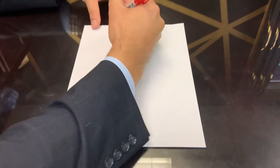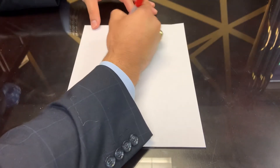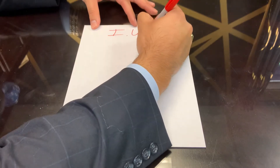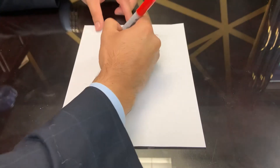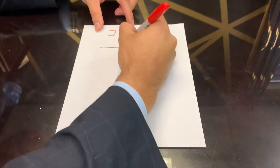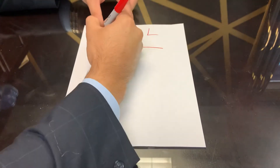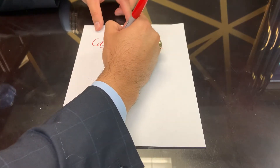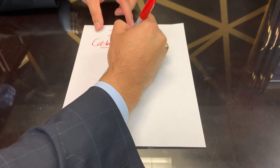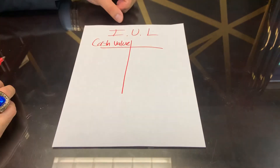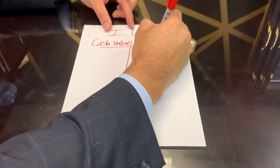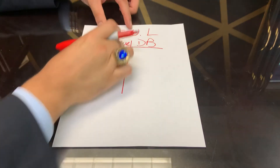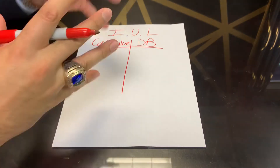The IUL stands for Indexed Universal Life. It has two simple components: it has a cash value saving side to it, and it has a death benefit. The cash value savings is money we can use.